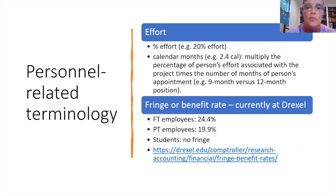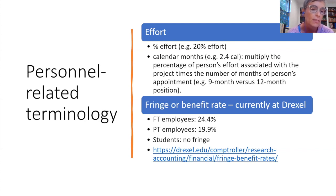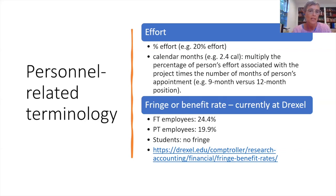For many grants you'll need to list percentage effort and also calendar months. For example, 20% effort equals 2.4 calendar months. You get that by multiplying the percentage of a person's effort times the number of months of their appointment — whether a 9-month or 12-month faculty appointment. In practice, I go by percentage effort and give that to our budget person who handles the conversion.